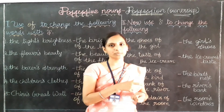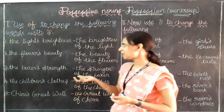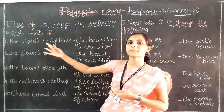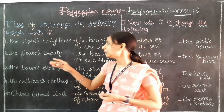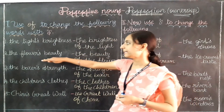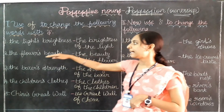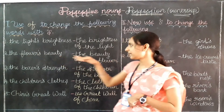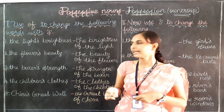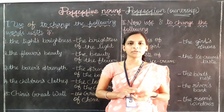So those are the answers for the second part. This is also very easy. When the sentence uses 'of,' write the owner name with apostrophe-S first, then what it owns. Now let's go and do the third part.